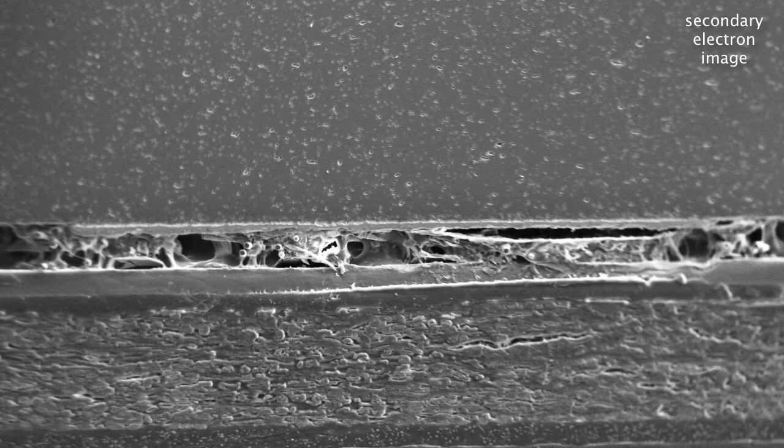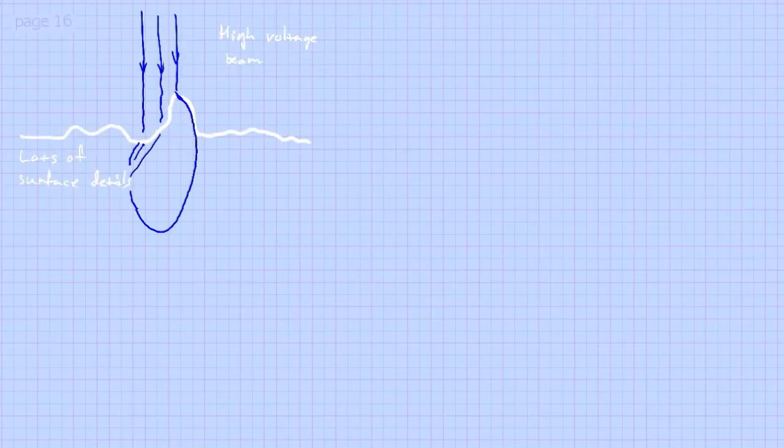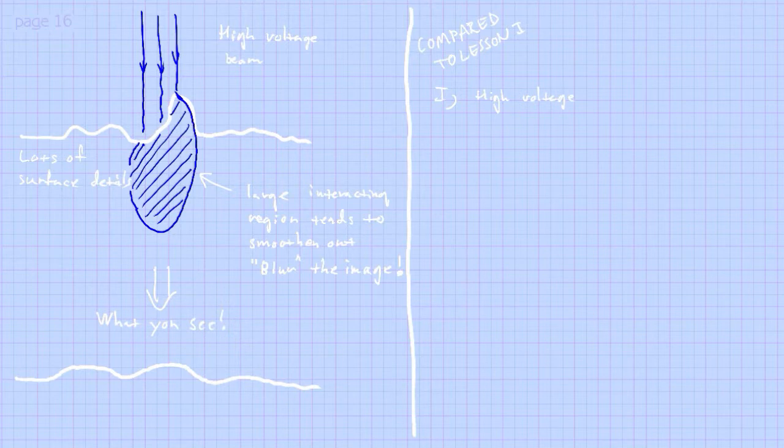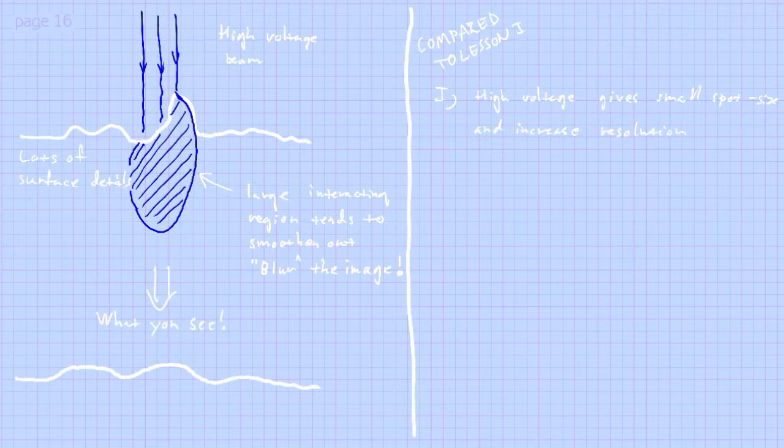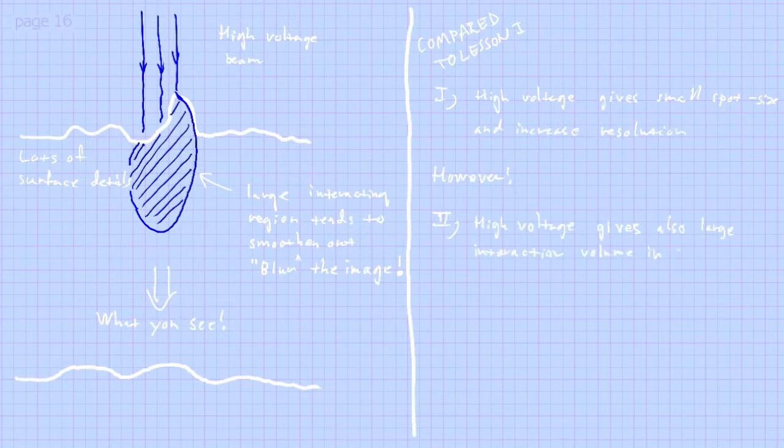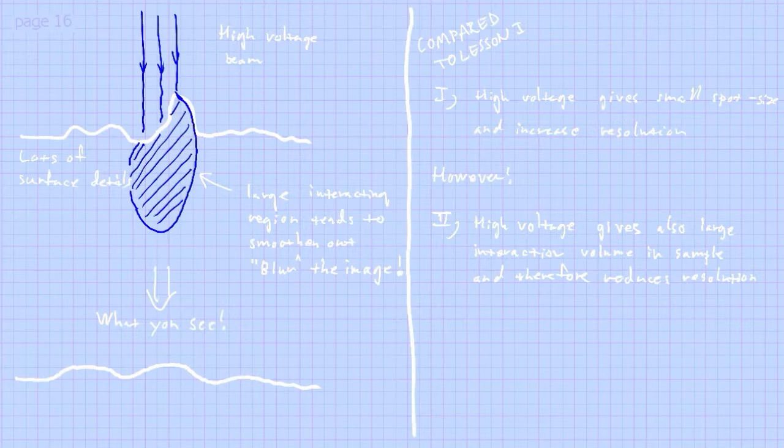But if you have a high accelerating voltage, then you will also have a big interacting volume in the sample, and that can reduce the resolution because you can't see the small details in the sample. That is sort of contradictory to what I said in the first lecture, because there we defined that the brightness was depending on the accelerating voltage. If you just increase the accelerating voltage, then you will optimize it and give it better resolution. So here you see the give and take situation. Theoretically high voltage is good from the gun viewpoint, but in the sample interaction viewpoint, that might actually be bad. So this is a give and take situation, so you need to optimize this depending on the sample.